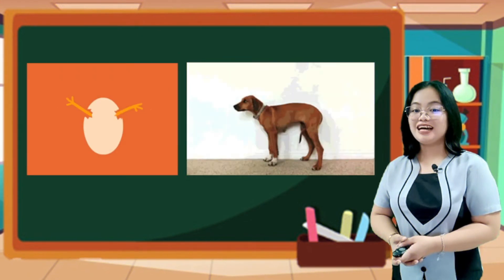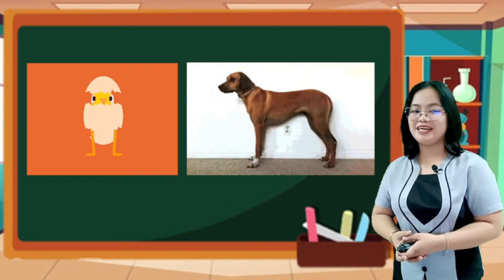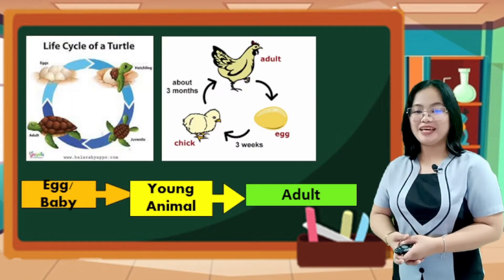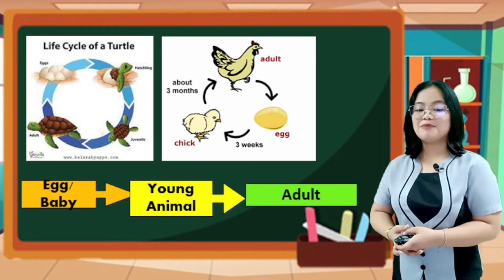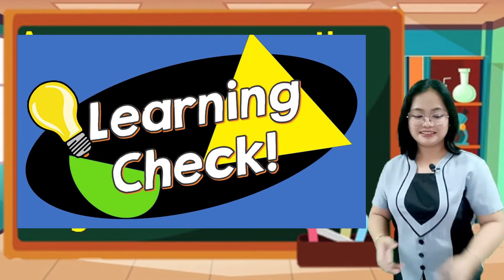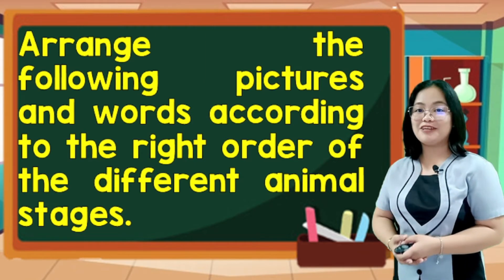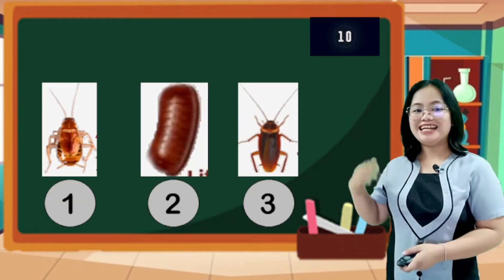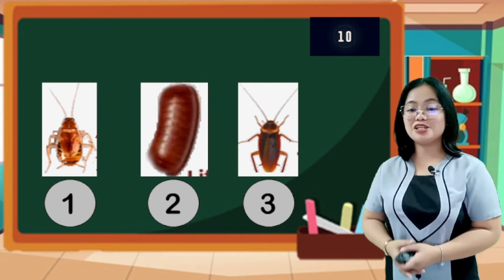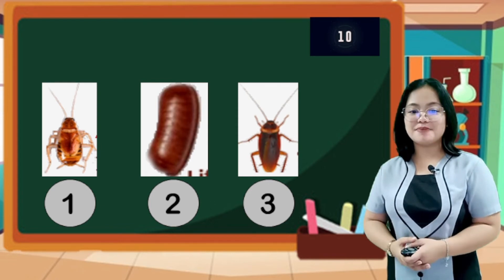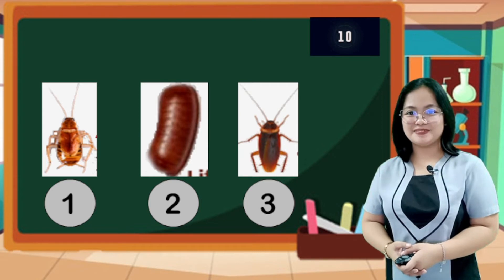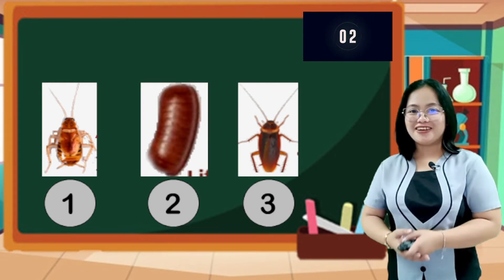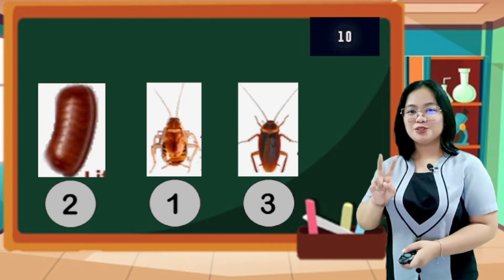Animals, on the other hand, begin life either from an egg or as a baby that is born ready for life. Animals grow and change as they mature and become adults. Adult animals begin the life cycle by looking for a mate. Each type of animal has their own unique life cycle. Learning check! Let us arrange the following pictures according to the right order of the different animal stages. You have 10 seconds. Timer starts now. The correct arrangement is number 2, 1, and 3.